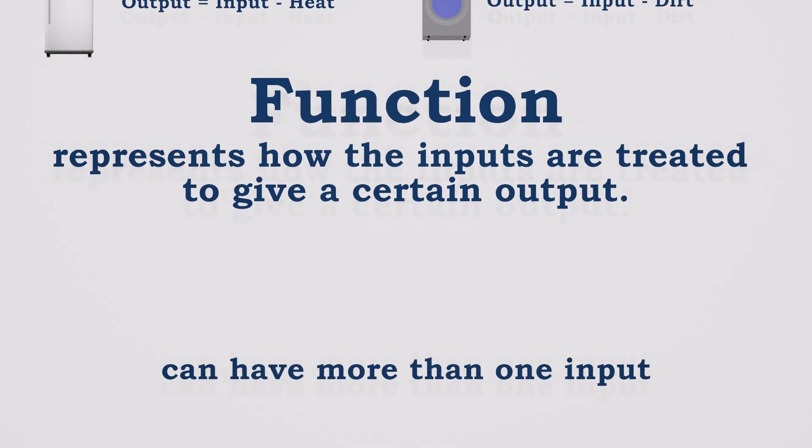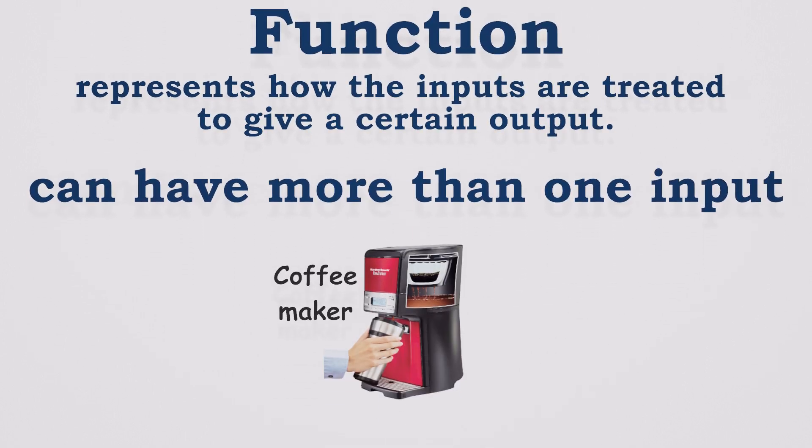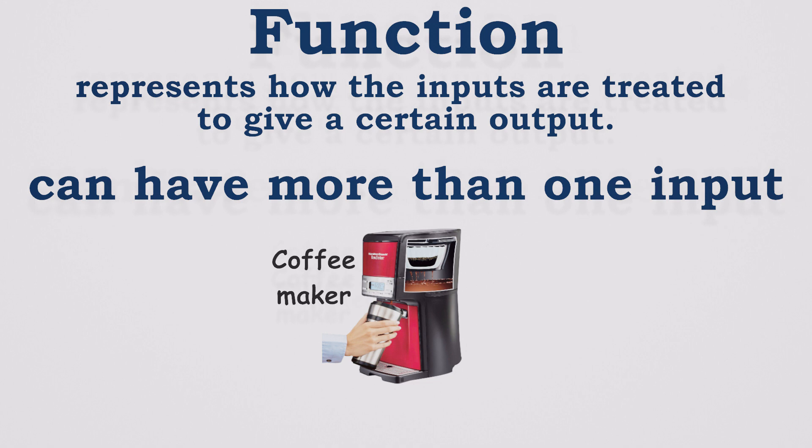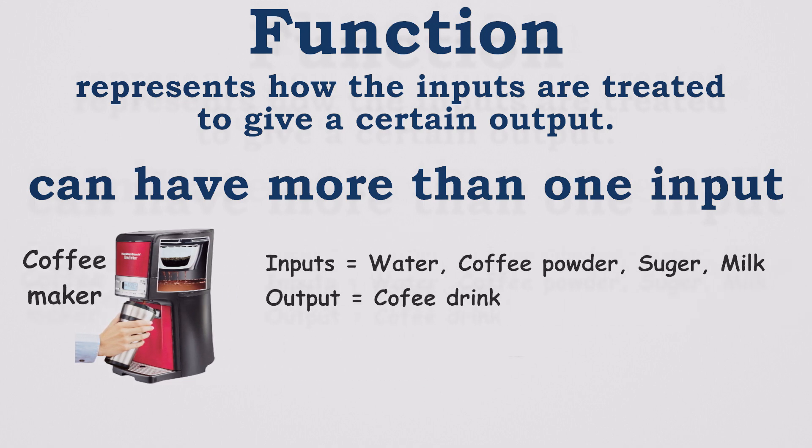A function can have more than one input. For example, think about a coffee maker. We put water, coffee powder, sugar, and milk into the machine, and it gives us delicious coffee. This machine mixes and boils the inputs, so we can write the function of a coffee maker like this.